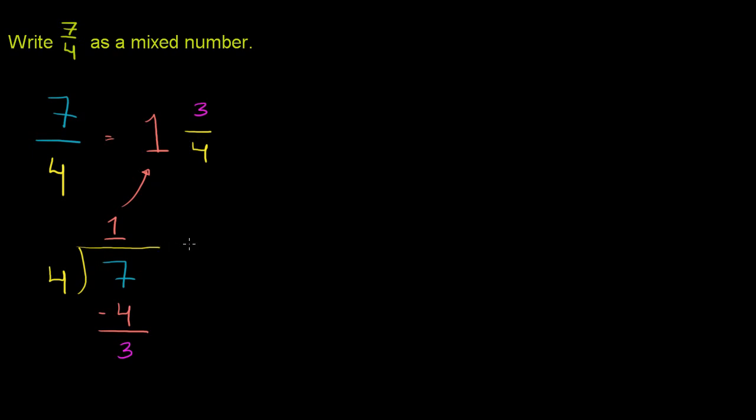Now, it might seem a little bit like voodoo what I just did. I divide 4 into 7. It goes one time. And then the remainder is 3. So I got 1 and 3 fourths. But why does that make sense? Why does that actually make sense? So let's draw fourths. Let's draw literally 7 fourths. And maybe it'll become clear.